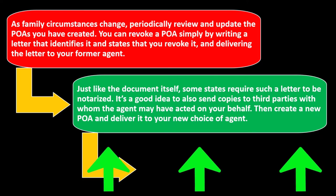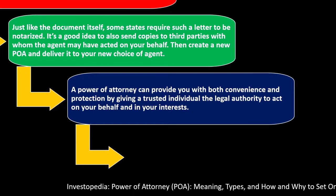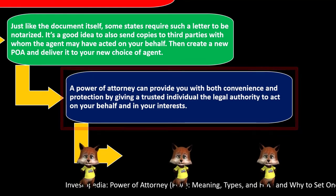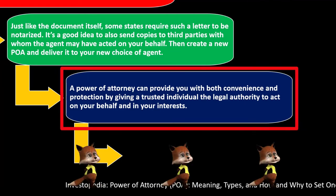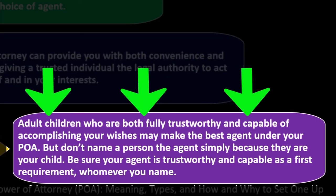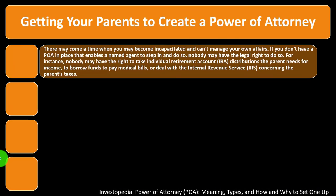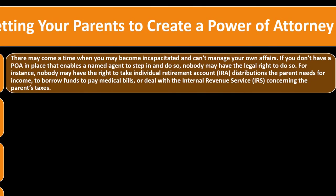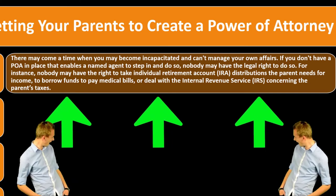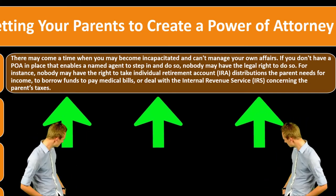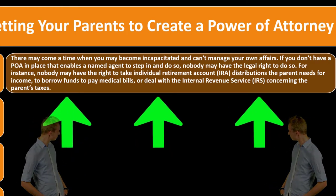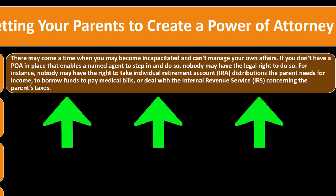It's a good idea to also send copies to third parties with whom the agent may have acted on your behalf, then create a new POA and deliver it to your new choice of agent. A power of attorney can provide both convenience and protection by giving a trusted individual the legal authority to act in your interests. Adult children who are fully trustworthy and capable may make the best agents, but don't name a person simply because they are your child — trustworthiness and capability must be the first requirement.